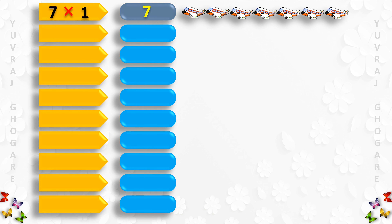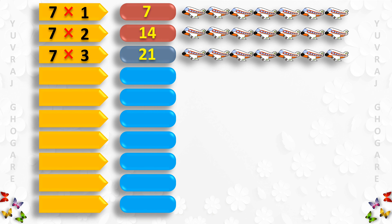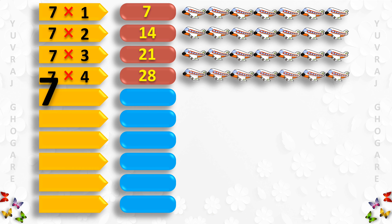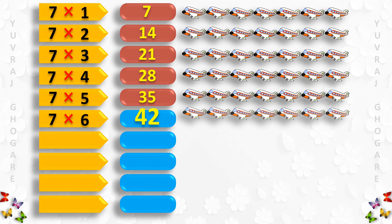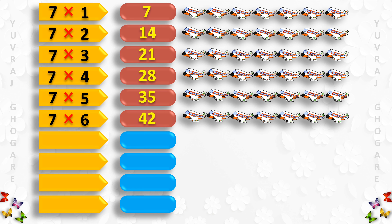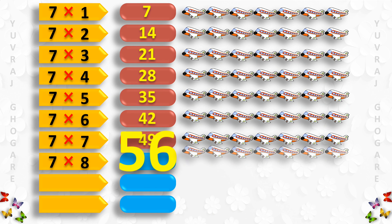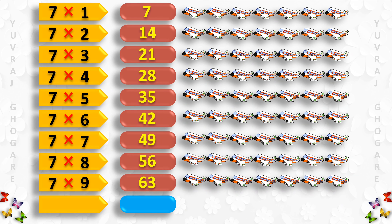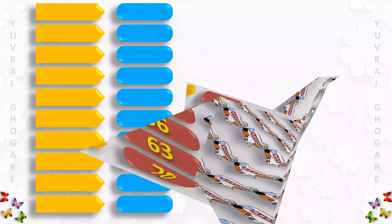Table of 7: 7 1s are 7, 7 2s are 14, 7 3s are 21, 7 4s are 28, 7 5s are 35, 7 6s are 42, 7 7s are 49, 7 8s are 56, 7 9s are 63, 7 10s are 70.